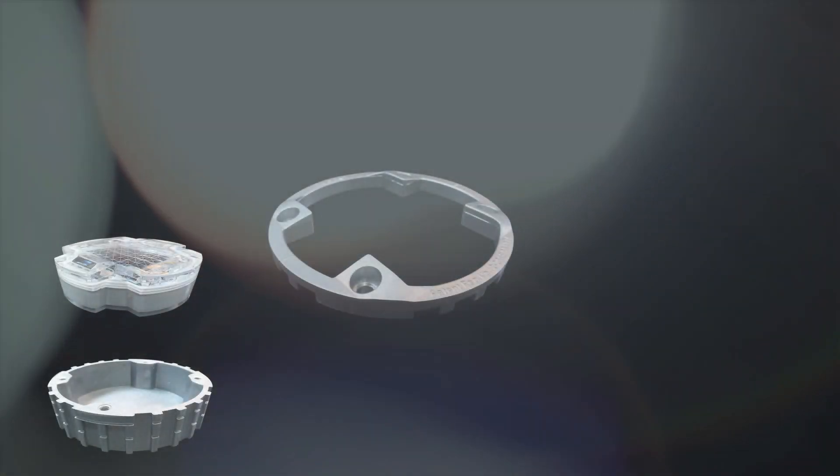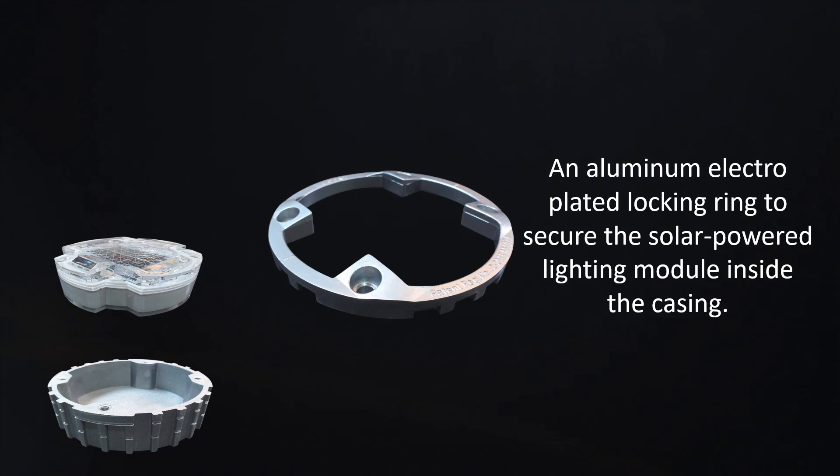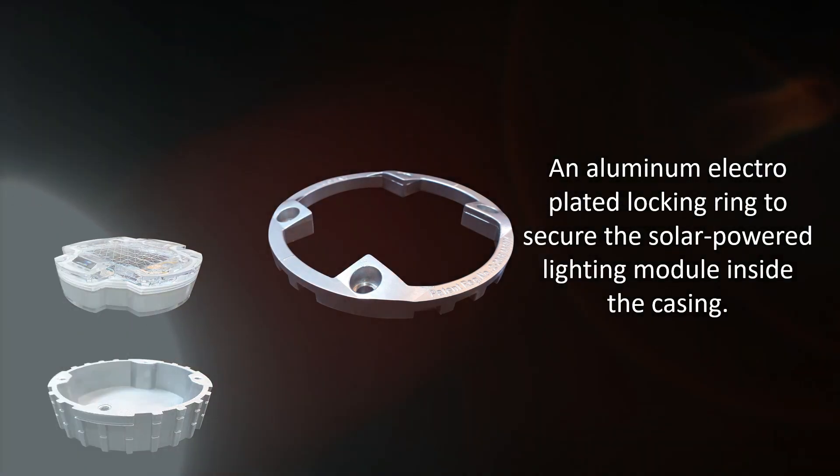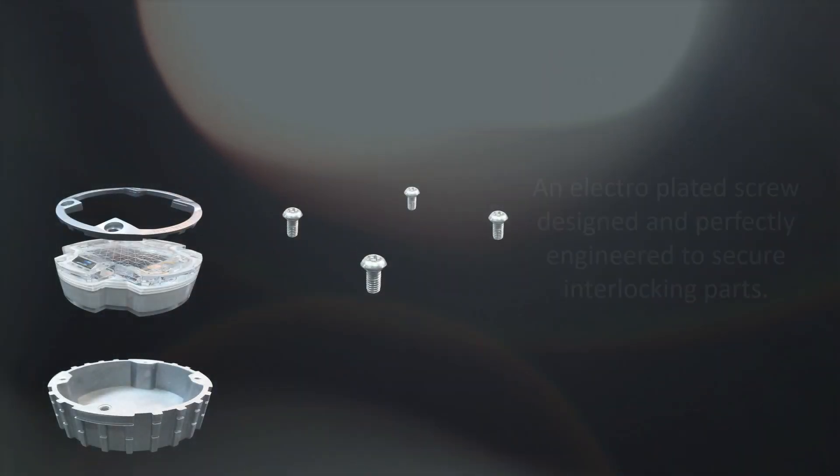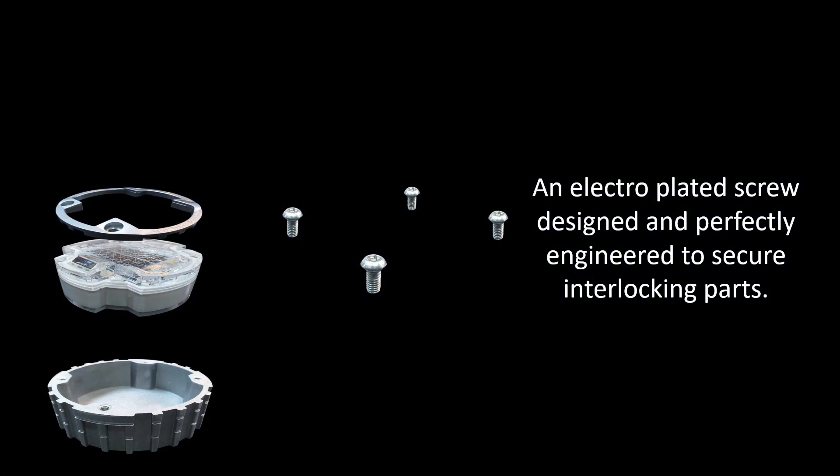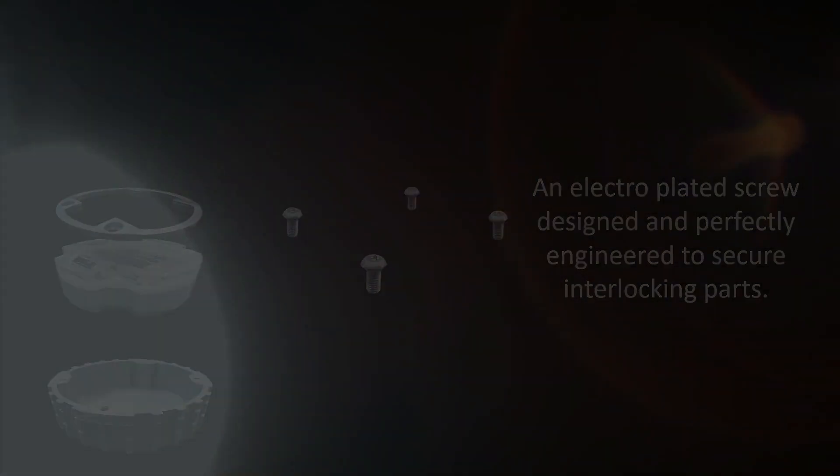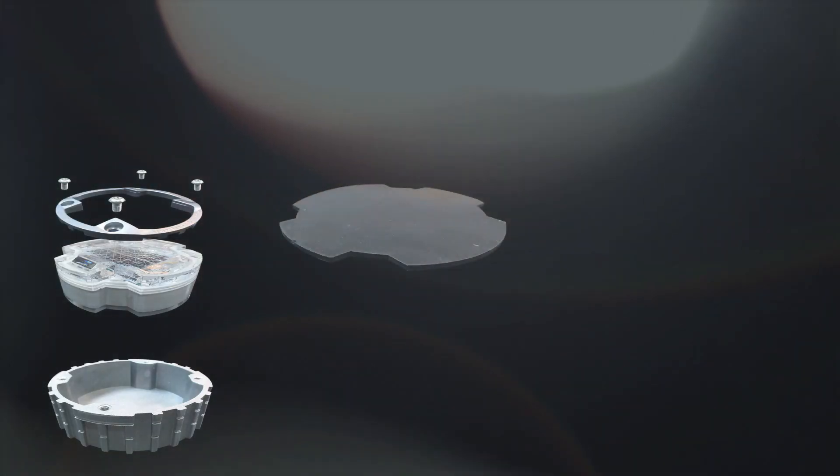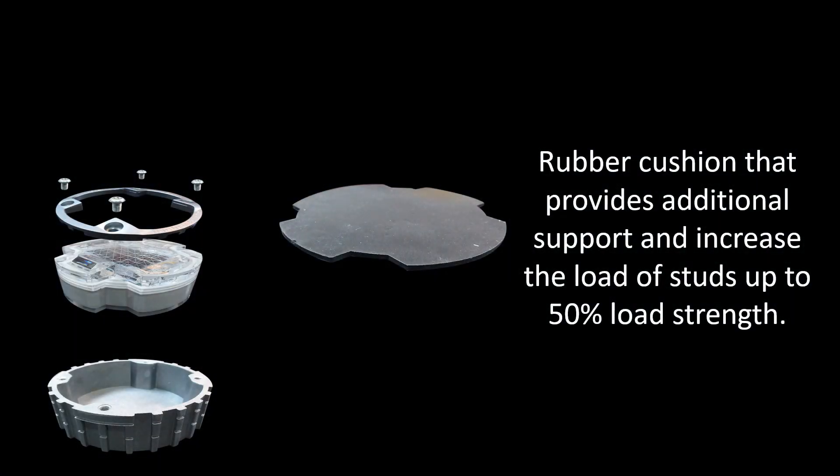An aluminum electroplated locking ring secures the solar-powered lighting module inside the casing. An electroplated screw is designed and perfectly engineered to secure interlocking parts. Rubber cushion provides additional support and increases the load of studs up to 50% load strength.